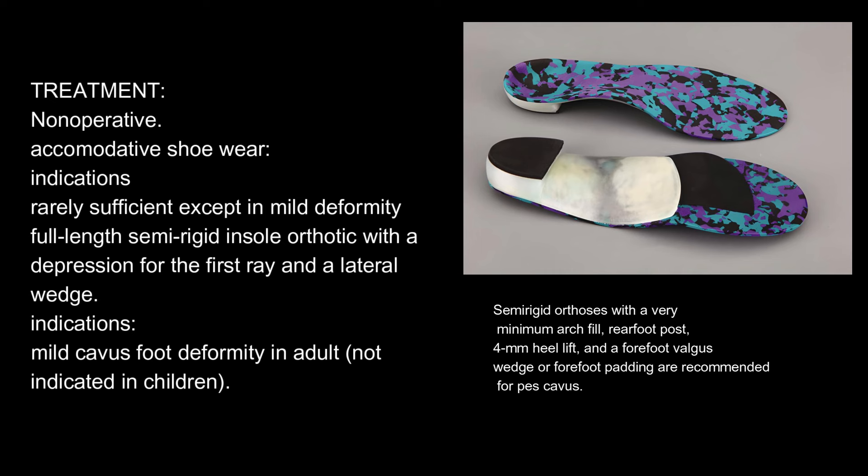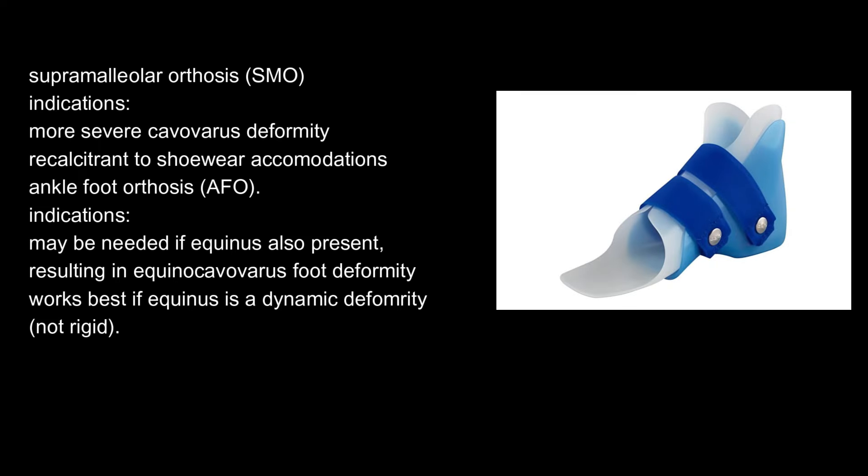Non-operative treatment: accommodative shoe wear is rarely sufficient except in mild deformity. A full-length semi-rigid insole orthotic with a depression for the first ray and a lateral wedge is indicated for mild cavus foot deformity in adults, but not indicated in children. Semi-rigid orthoses with minimal arch fill, rearfoot post, forefoot heel lift, and a forefoot valgus wedge or forefoot padding are recommended for pes cavus.